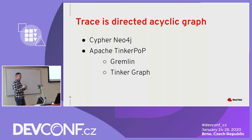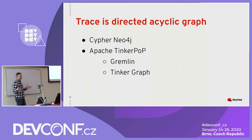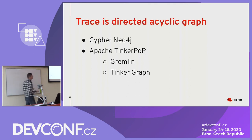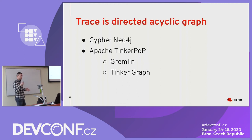So we couldn't use Cypher. The next choice was Apache TinkerPop, which is a framework with many components. One component is Gremlin, a graph traversal language — very different from Cypher, it's a functional language. Gremlin is great because you can actually add new methods to the language, as we'll see in a minute.